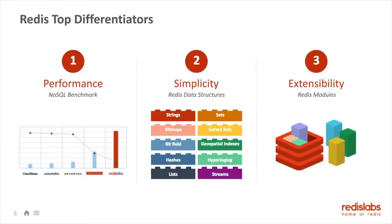So what is Redis and what are our top differentiators? Redis is an in-memory database and a key-value store. The top differentiators are its performance, simplicity, and extensibility. Redis has built-in data types or data structures. Compare it to the simplest key-value store like Memcache, where the value is always a string. In Redis you have all different data types — strings, sets, sorted sets, hashes. You could see it as memory as a service, where each data type has a counterpart in your programming language of choice.